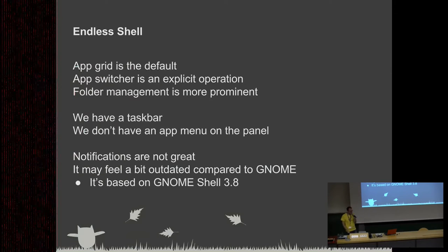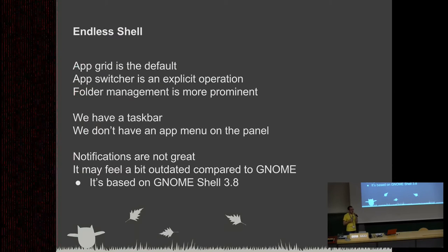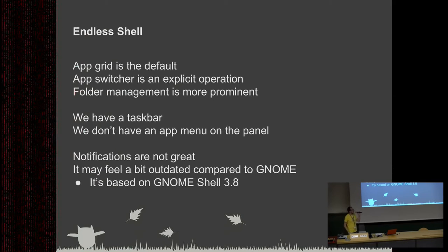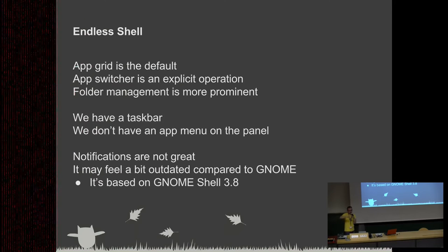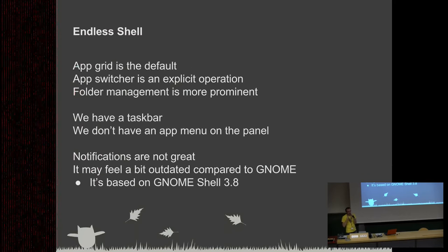The Endless Shell looks a lot more like a tablet UI than GNOME. The application grid — the launcher grid — is front and center. That's the main difference with GNOME Shell: in GNOME Shell the window picker is front and center, whereas in Endless Shell we have the application picker front and center. The window switcher is an explicit operation you have to go and click to find. Folder management is also much more prominent — you can drag and drop things, create folders that way, and move things in and out of folders, a bit like a phone or mobile OS.